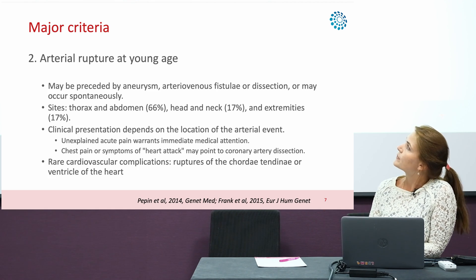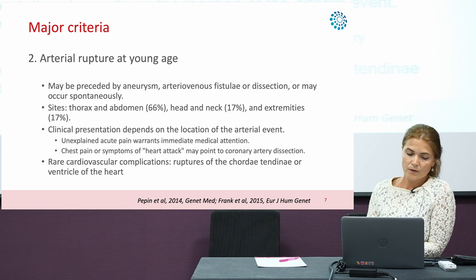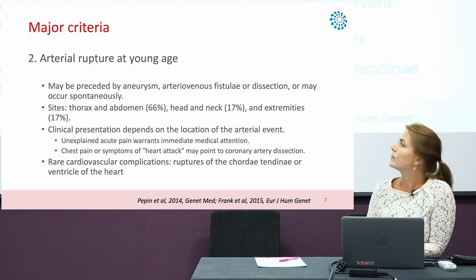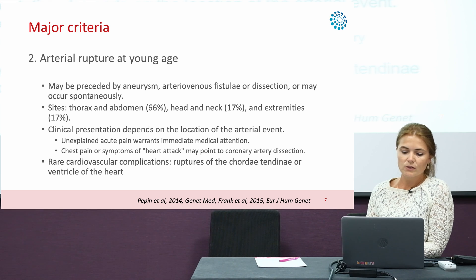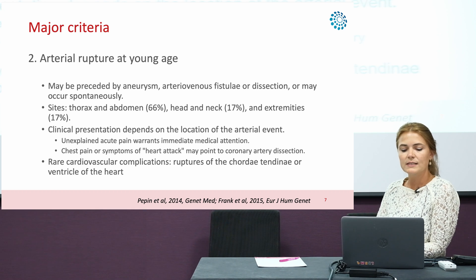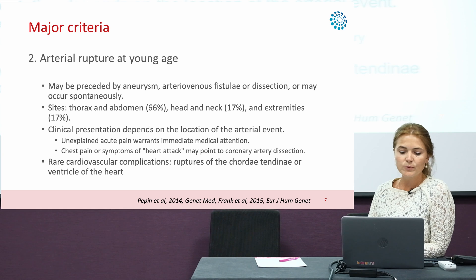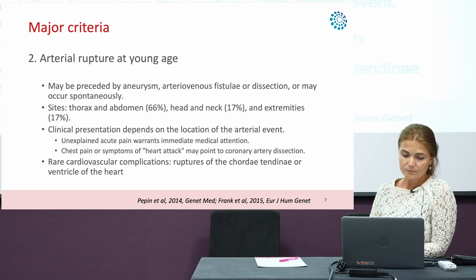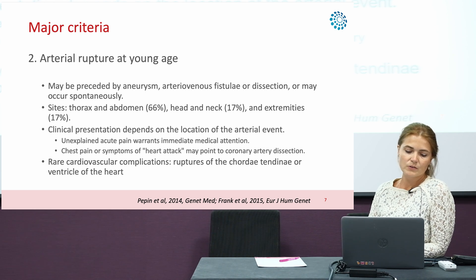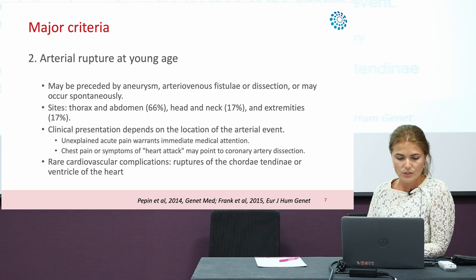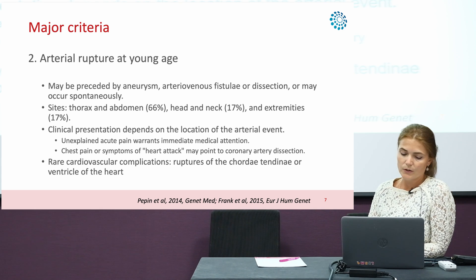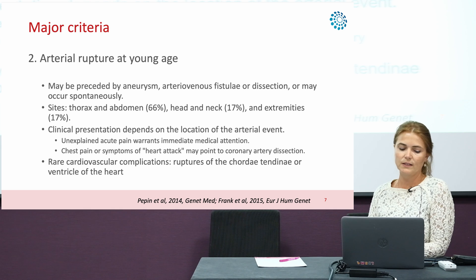The second major criterion is arterial rupture at a young age. This arterial rupture may be preceded by an aneurysm, a fistula, or a dissection, but may also occur spontaneously. Most arterial ruptures involve medium-sized arteries in the thorax and abdomen, but also in the head, neck, and extremities. Unexplained acute pain in patients with vascular EDS warrants immediate medical attention. Chest pain or symptoms of a heart attack may point to coronary artery dissection, and other rare cardiovascular complications include ruptures of the chordae tendineae of the ventricles of the heart.